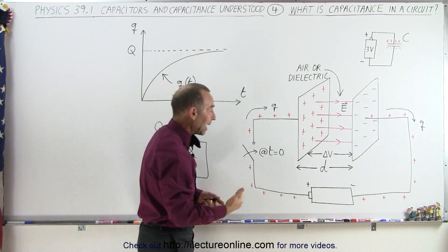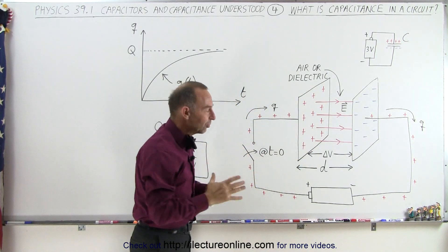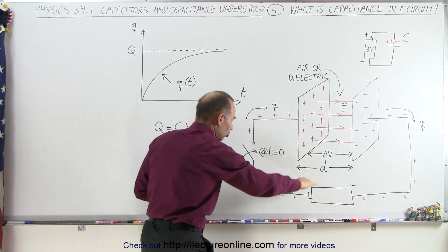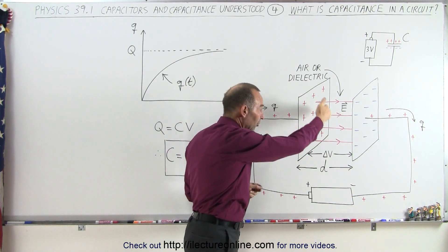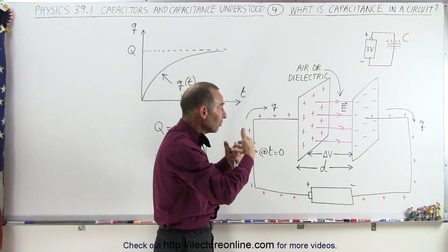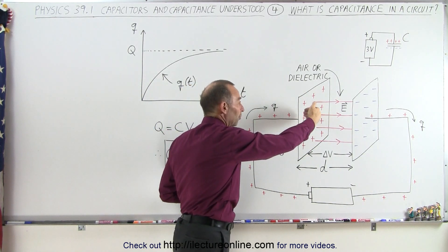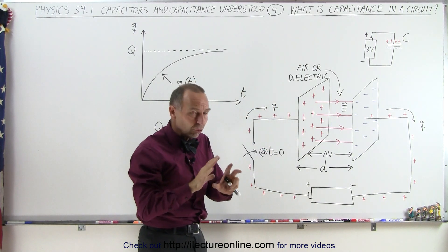So initially, it's not a big problem for the battery, because the charges are far apart, there's not a lot of repulsive forces, and so the battery continues to push charges onto the plate. But as more and more charge piles onto the plate, the repulsive forces between the charges continues to increase, and that repulsive force begins to push back against the battery, trying to slow down.